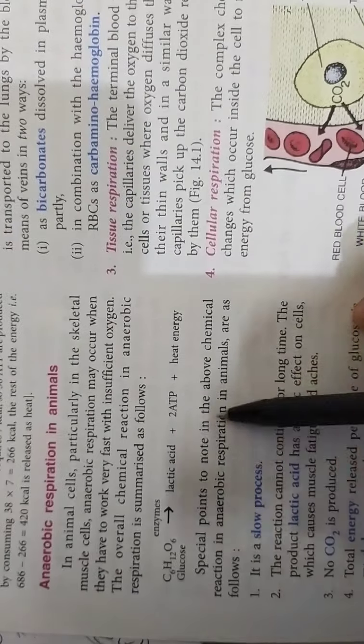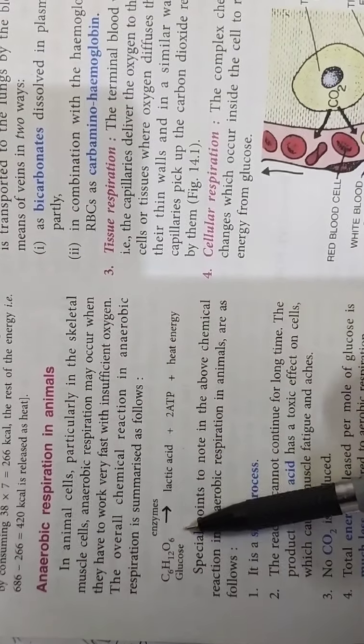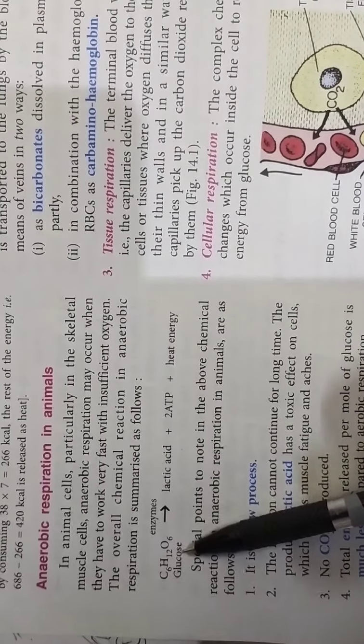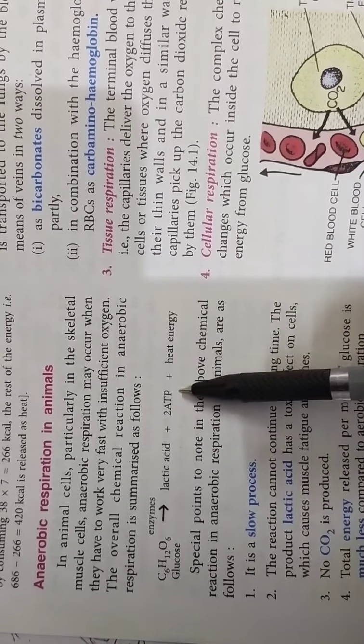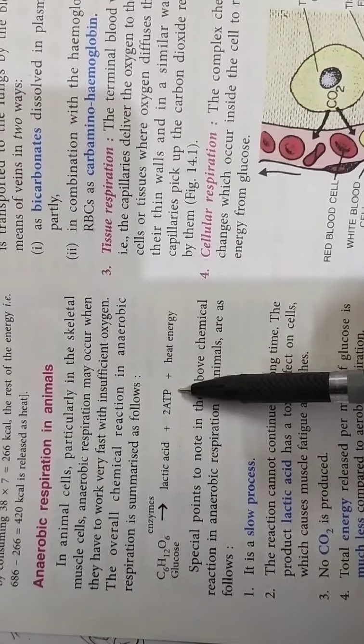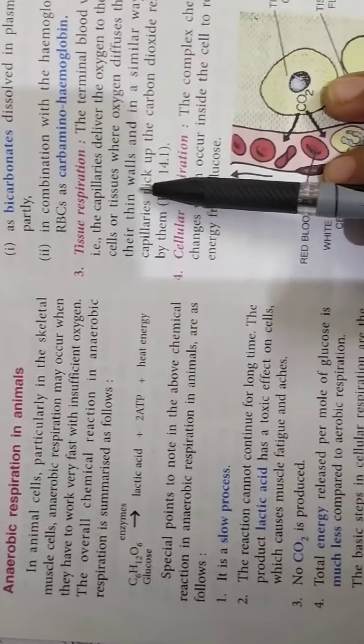And in case of anaerobic respiration, we are talking particularly about human beings. So here, glucose without oxygen with enzymes will produce lactic acid and two ATPs and no carbon dioxide plus heat energy.